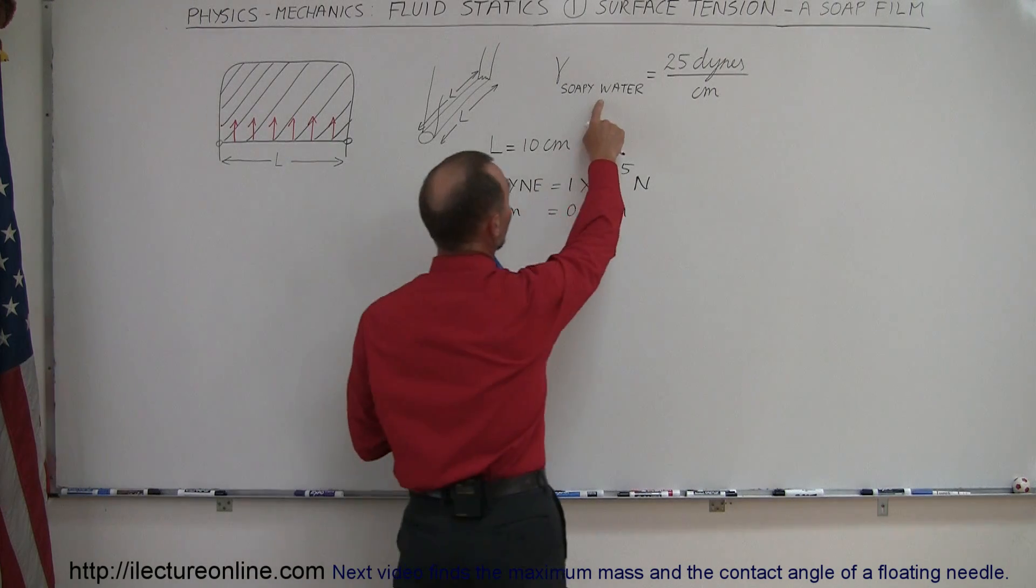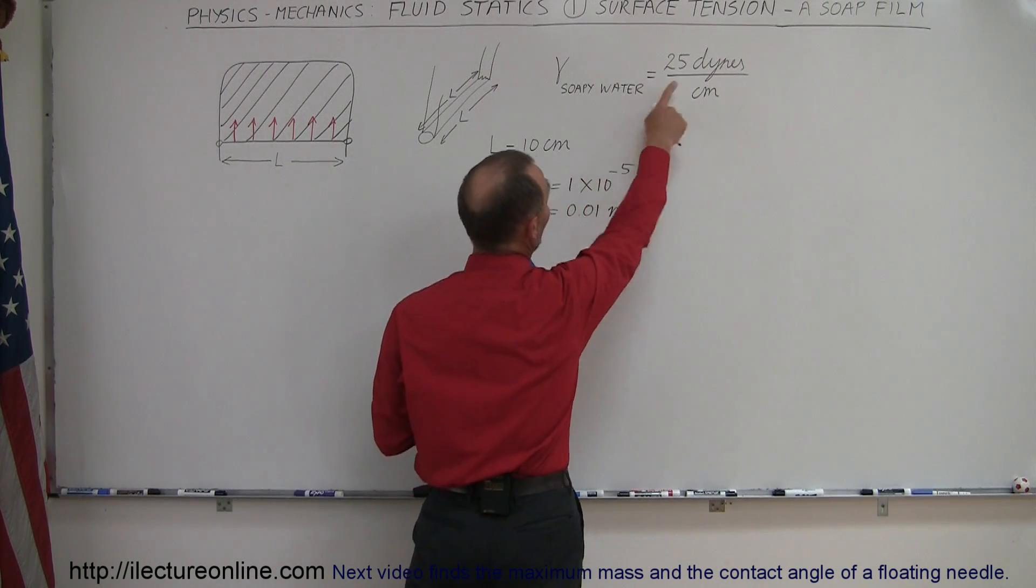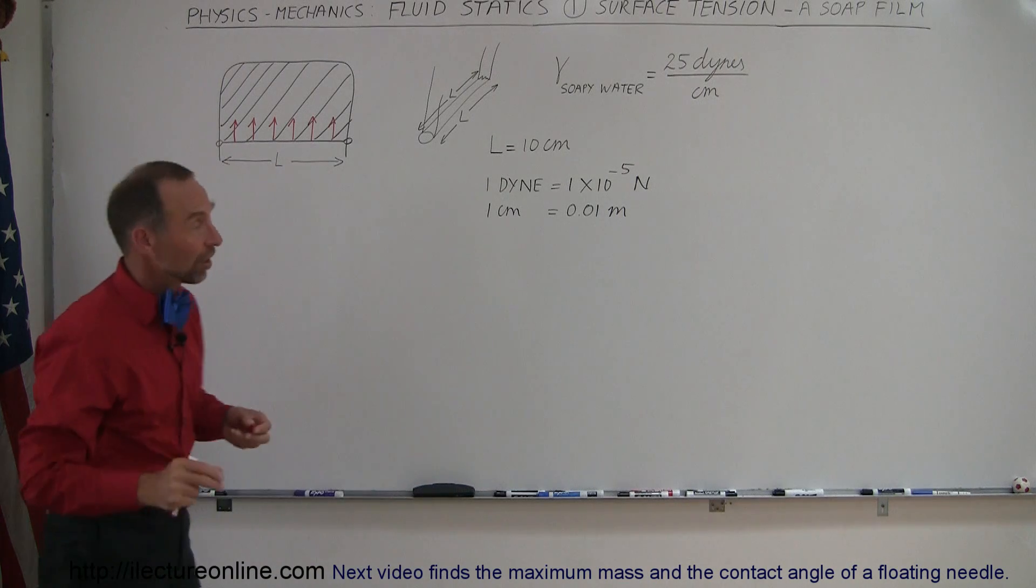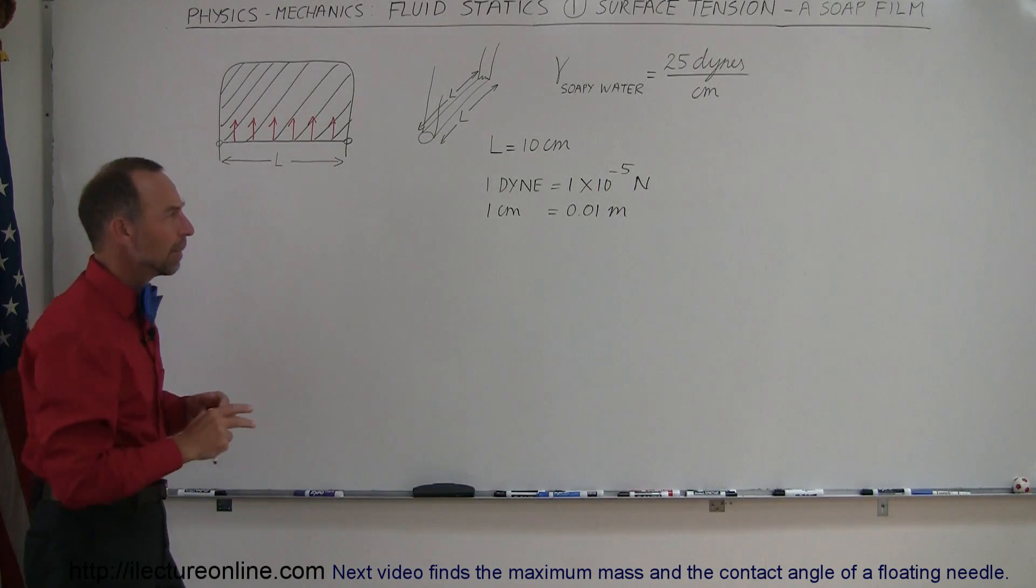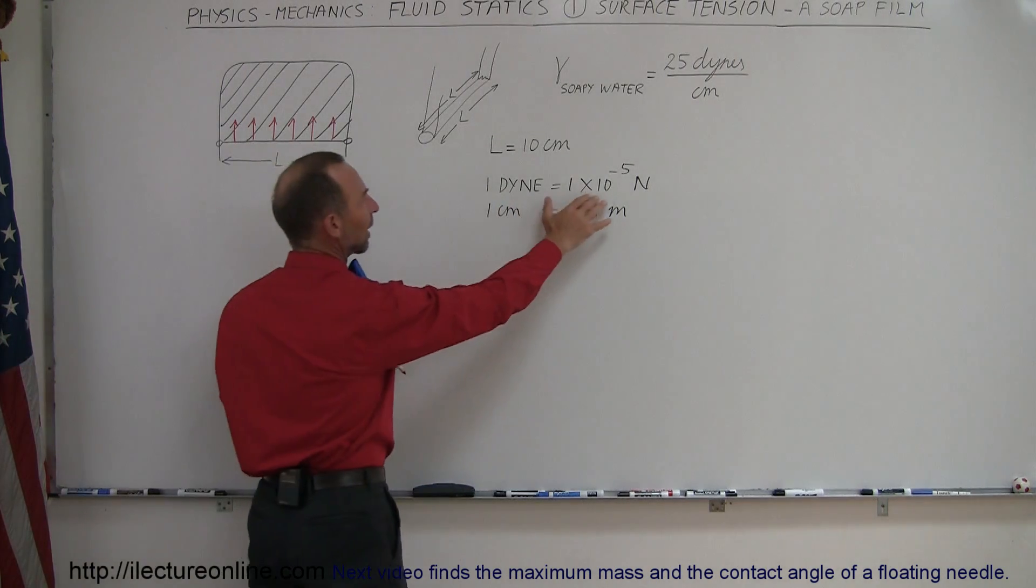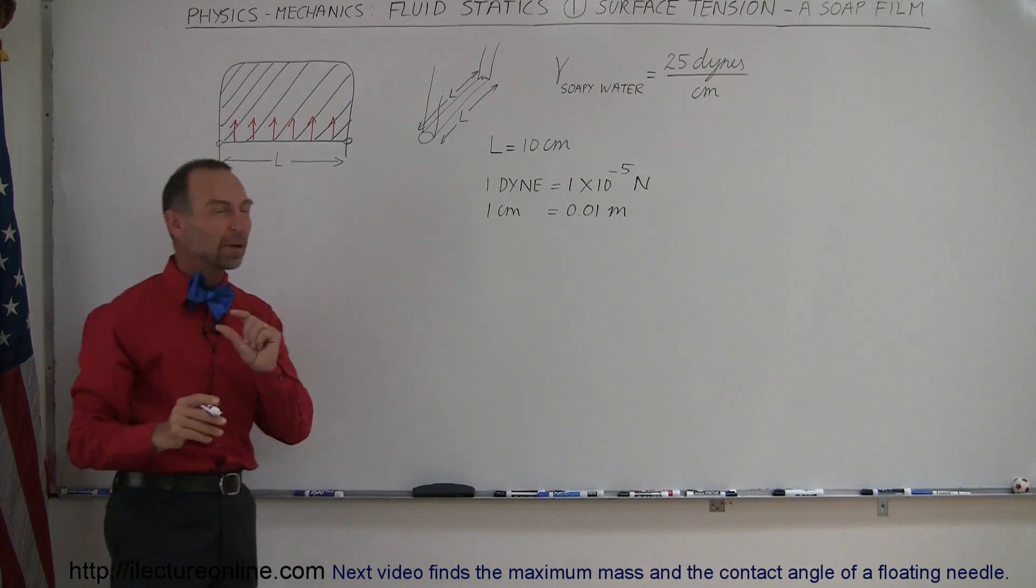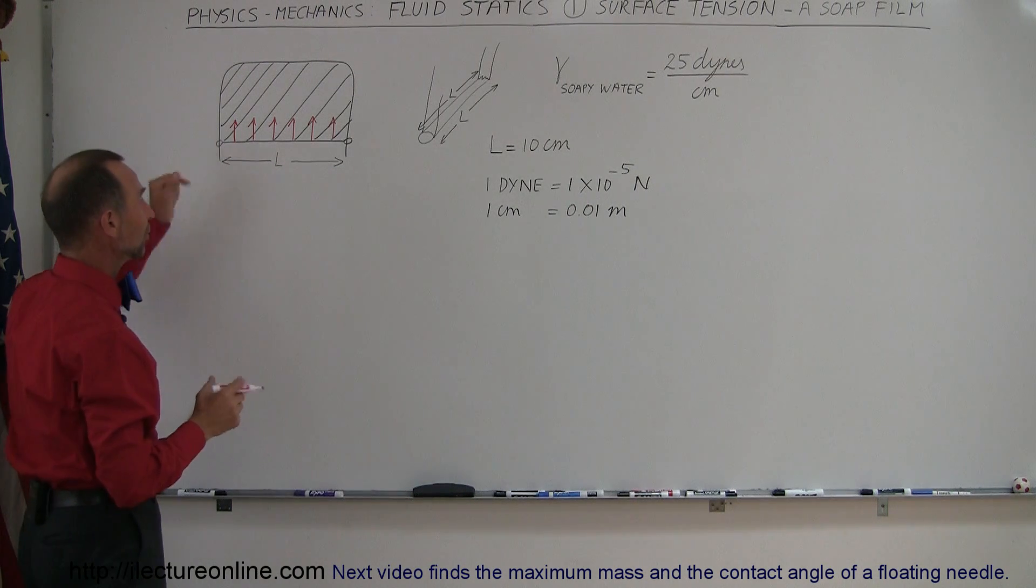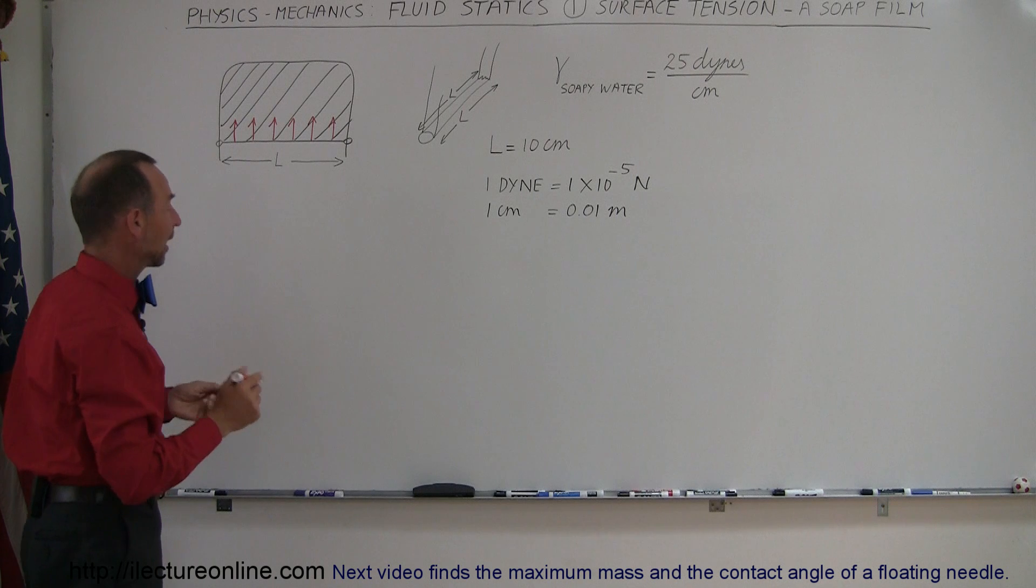Now the coefficient of surface tension for soapy water is 25 dynes per centimeter. So dynes is a very small amount of force. 1 dyne is 1 times 10 to the minus 5 N. So we're talking about just very small forces but for very small objects that does make an effect.